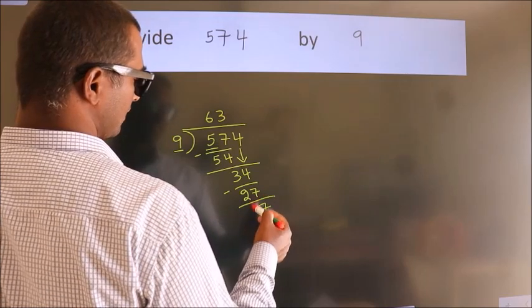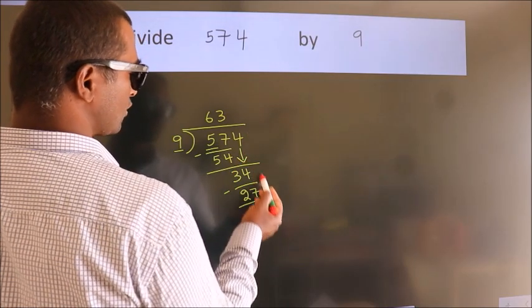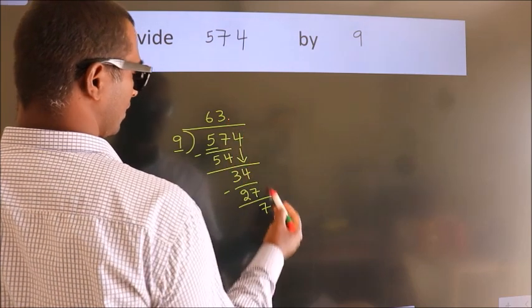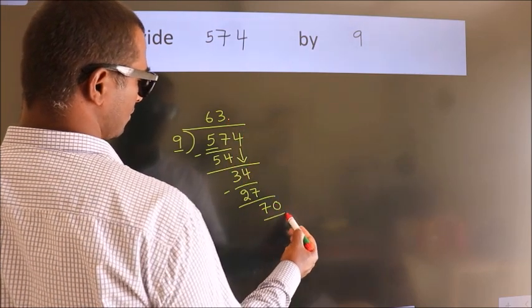After this, no more numbers to bring down. So what we do is put dot, take 0. So, 70.